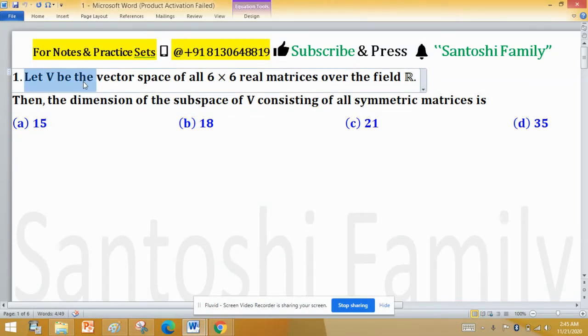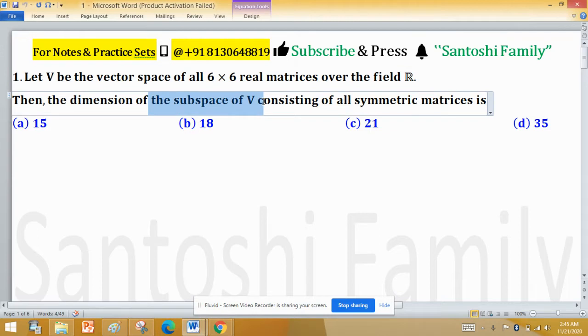Let V be the vector space of all 6 by 6 real matrices over the field R. Then the dimension of the subspace of V consisting of all symmetric matrices is: